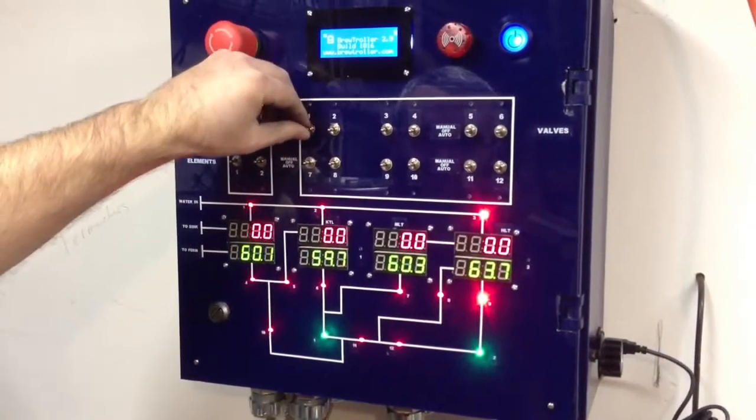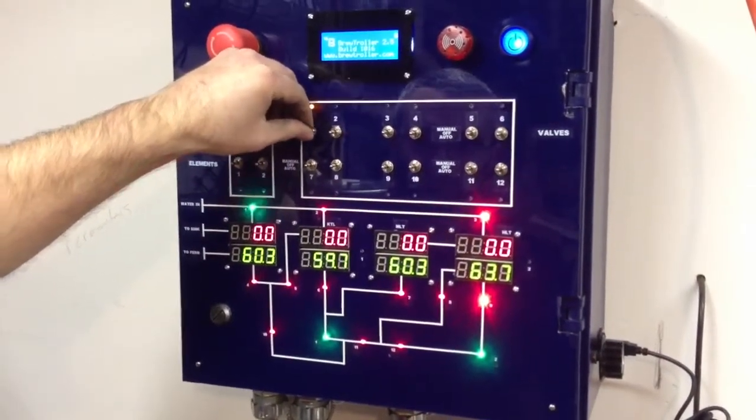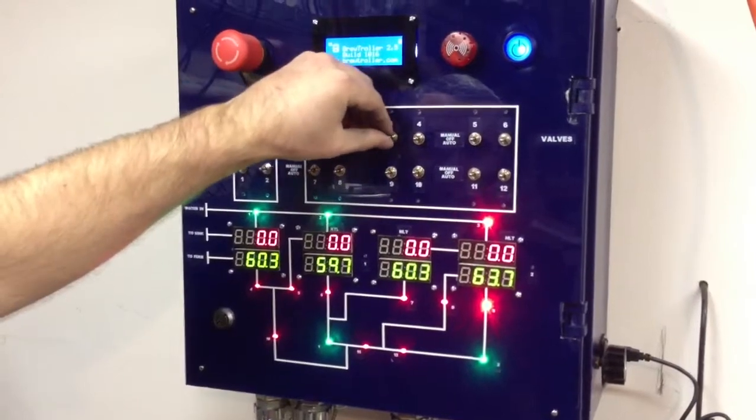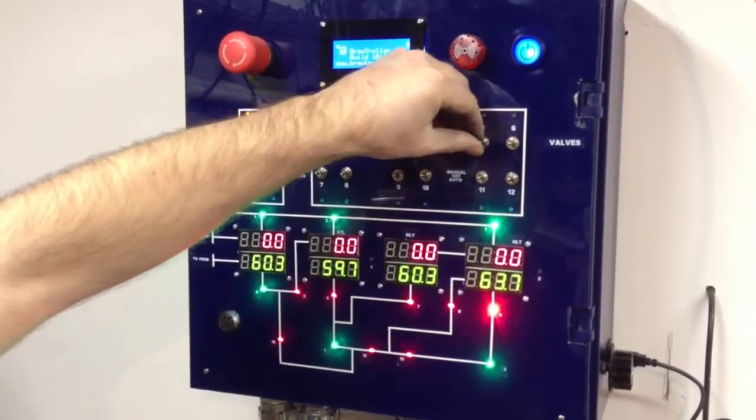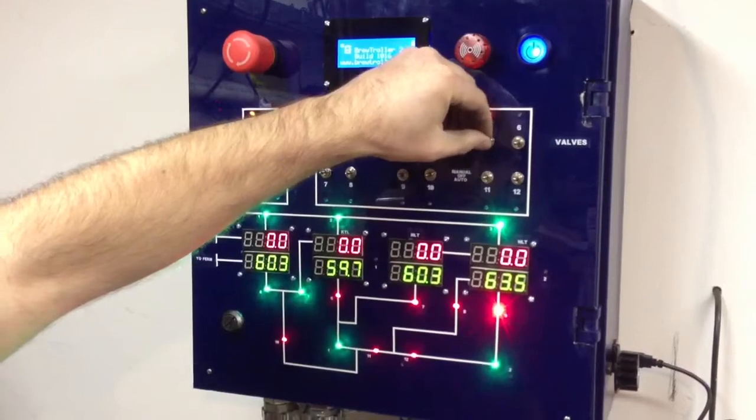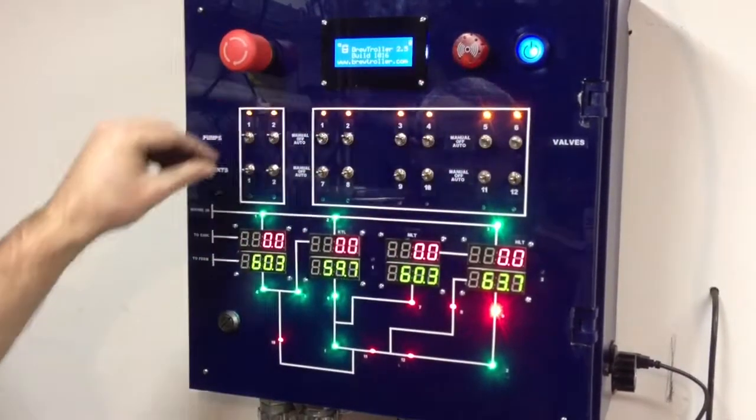And then these next series will be, one through six will be valves. And this is all the water in right there. Now that would be beer control or wort control to be more technical.